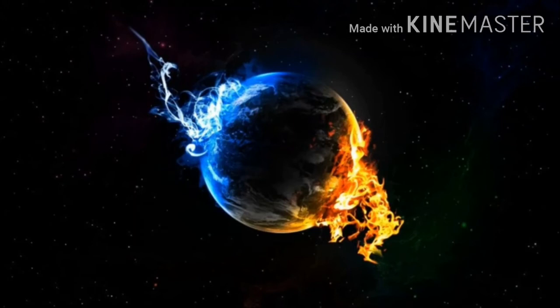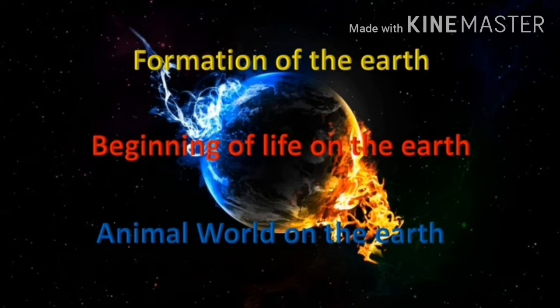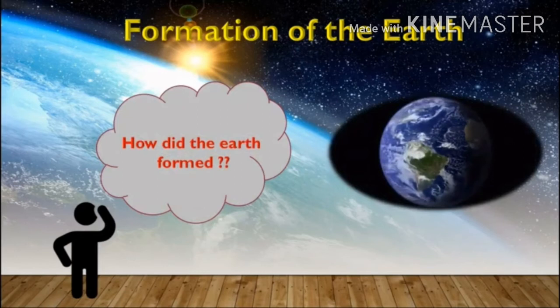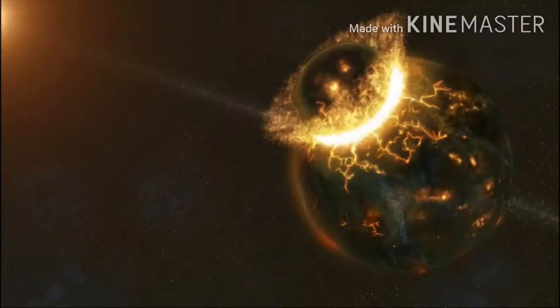When we think about Earth, there are many types of questions that arise in our mind. Like, how must have the Earth formed, how must have life began on Earth, and how must have the animal world existed on the Earth. We also think about when must have the Earth appeared or formed. Was it always the same as we see it today, or has it undergone some changes? If it has changed, what exactly are those changes?